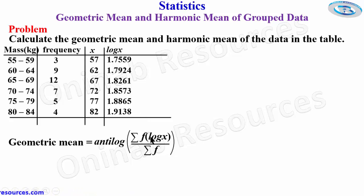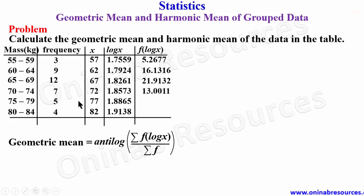So the next thing now is to find the product of the frequency and the log of x. We create another column f into log x, multiplying the frequency by the logarithm of x. 3 times 1.7559 gives 5.2677. 9 times 1.7924 gives 16.1316. 12 times 1.8261 gives 21.9132. 7 times 1.8573 gives 13.0011. 5 times 1.8865 gives 9.4325. And 4 times 1.9138 gives 7.6552.